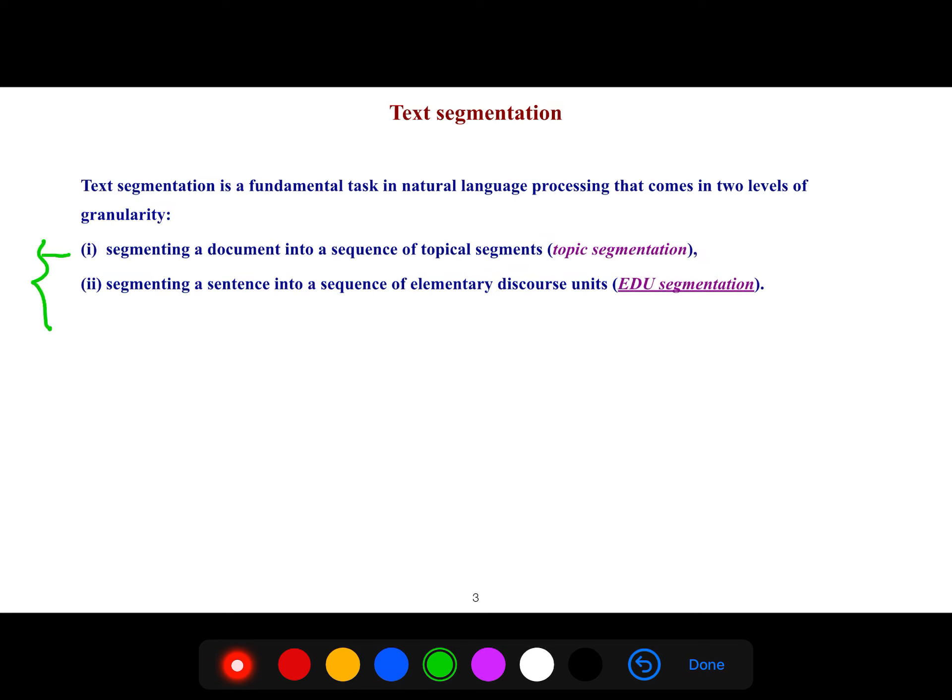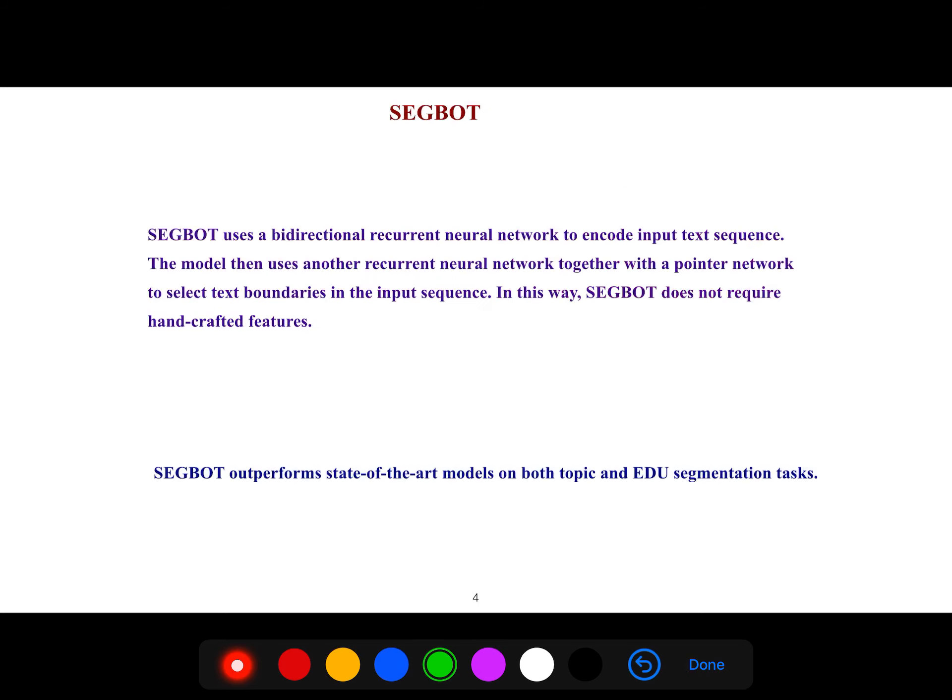For example, if you use this granularity segmenting a document in a sequence of topical segments, it is topic segmentation. But you can change your scope, your concentration and granularity. You get segmenting a sentence into a sequence of EDU.